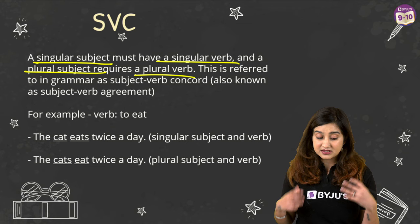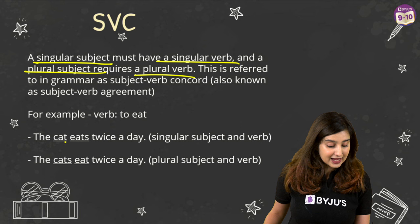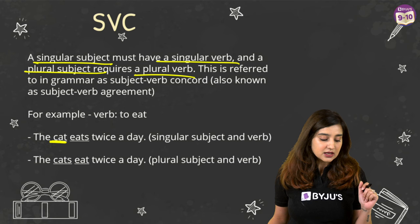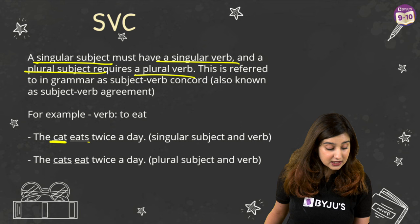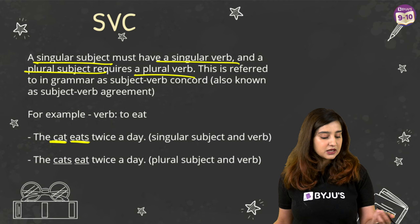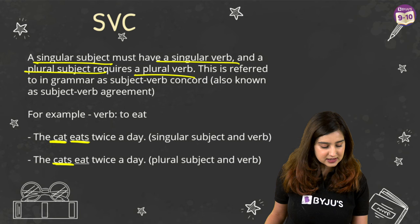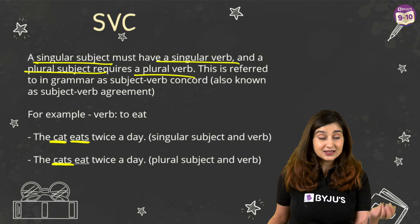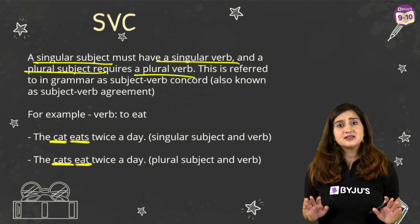That's the definition of subject-verb concord. Let's see it through an example. The cat is our subject here — it is singular, no S. So the verb has an S: 'eats twice a day.' Now if we make cat plural by adding an S — 'the cats' — the verb becomes plural by removing the S: 'The cats eat twice a day.' These are the simplest subject-verb concord sentences.